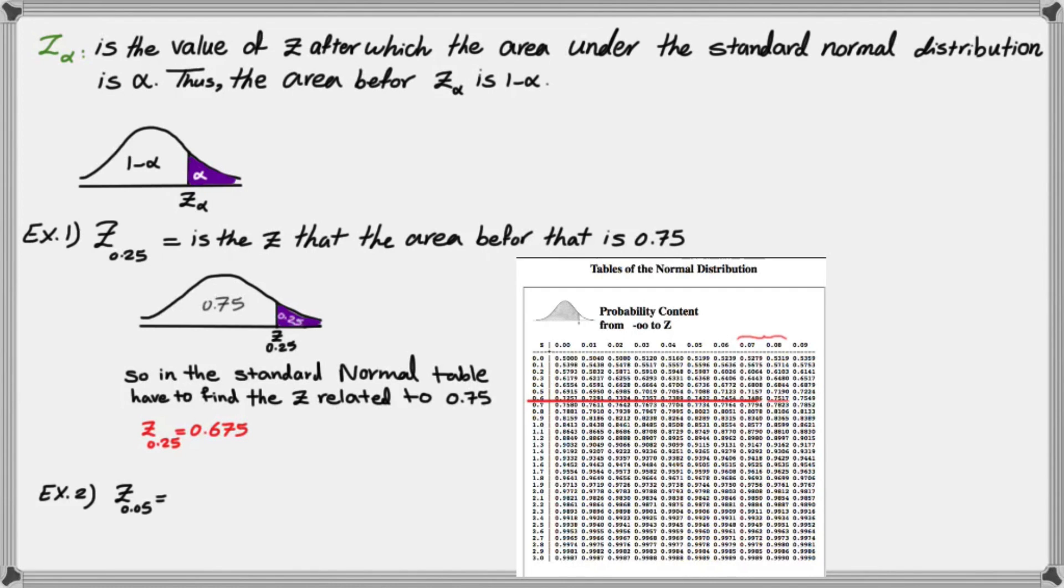Let's look at another example. Suppose that this time, we want to find the Z of 0.05. That means the area before Z of 0.05 is 0.95. And I have to find 0.95 inside my table because that's where the probabilities are given.